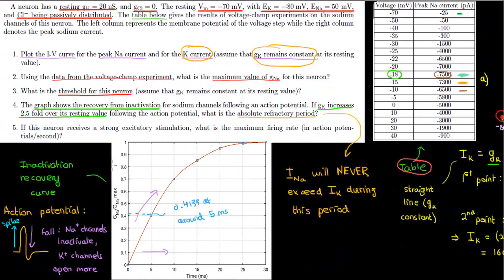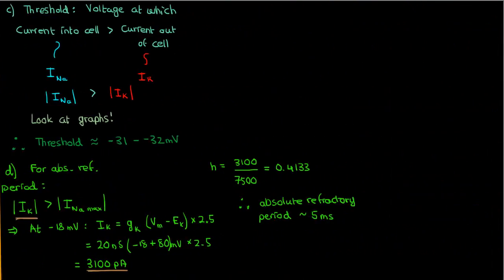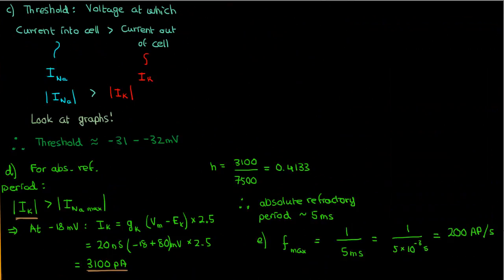The last part asks for the maximum frequency a neuron can fire if fed a really strong stimulus. This frequency is limited by the absolute refractory period, because it's only after this period that the neuron can fire action potentials. So the maximum possible firing frequency is 1 over 5 milliseconds, which is 200 action potentials per second. And that's it — you've successfully completed this practice problem. Thanks for watching.